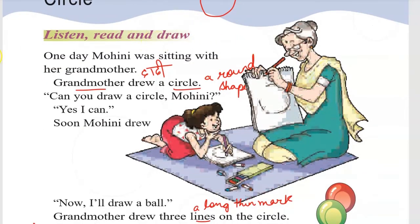Listen, read and draw. One day Mohini was sitting with her grandmother. Grandmother drew a circle. The circle is a round shape. Can you draw a circle, Mohini? Then the grandmother asked.